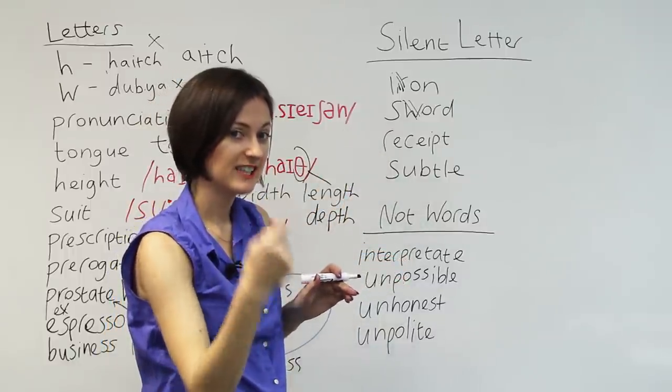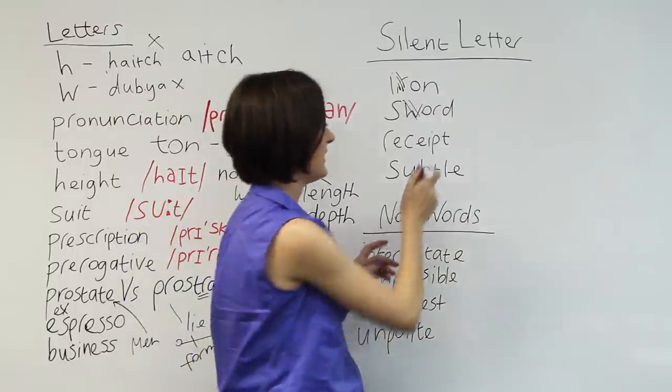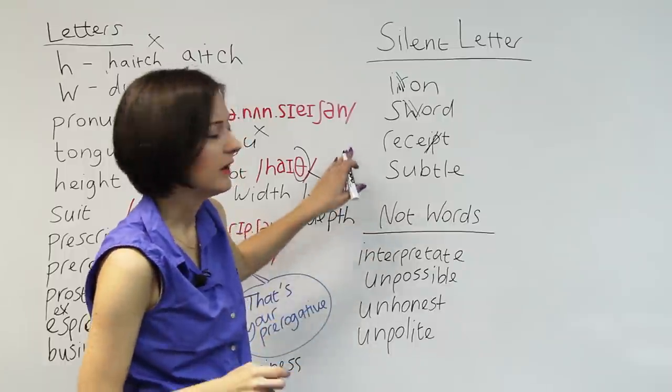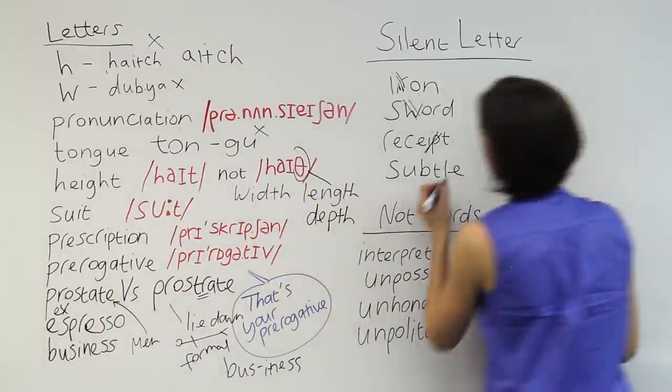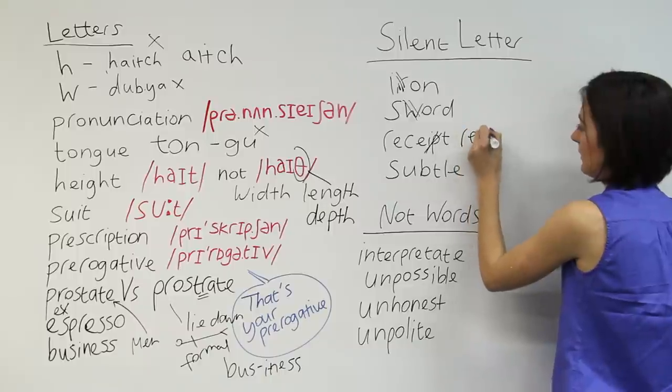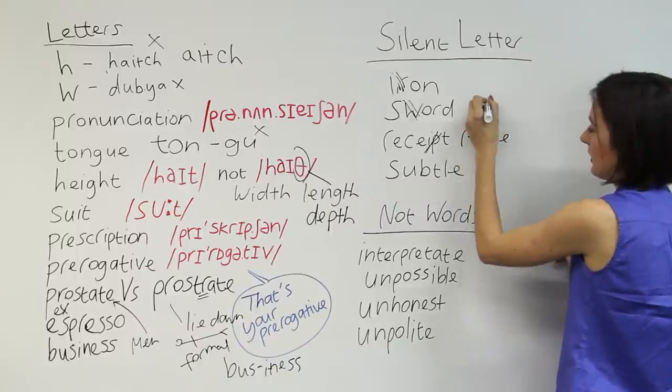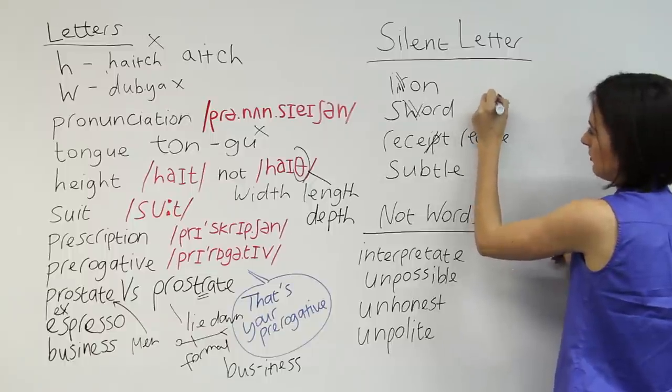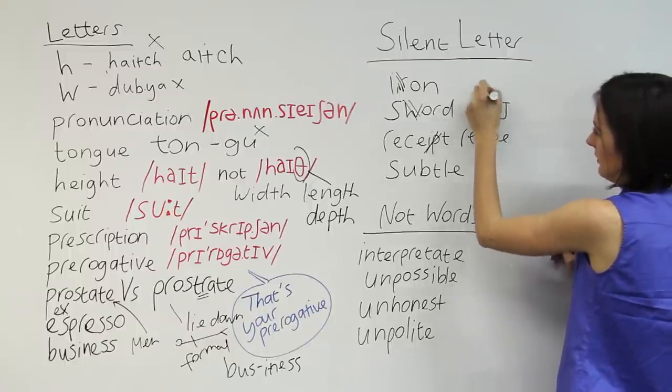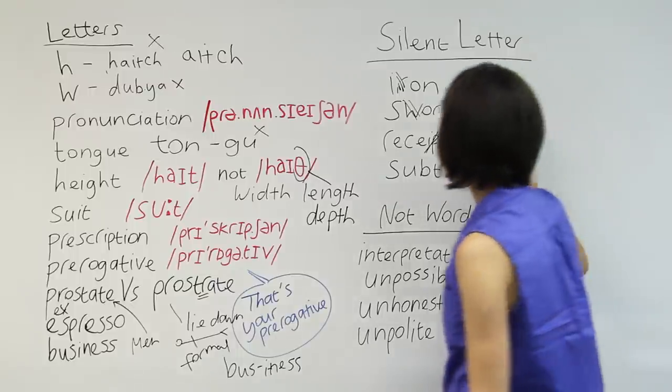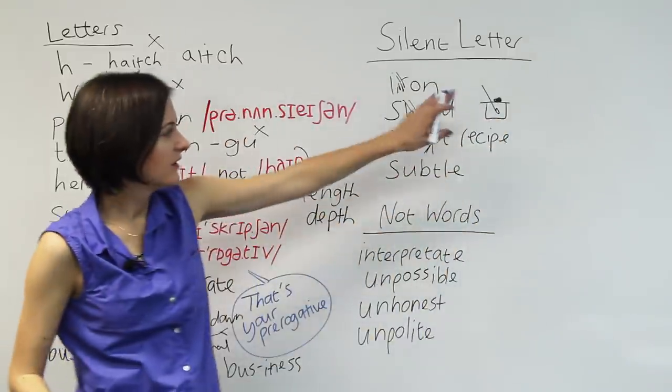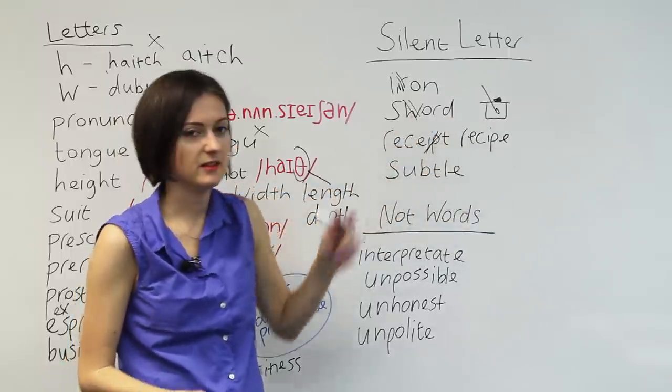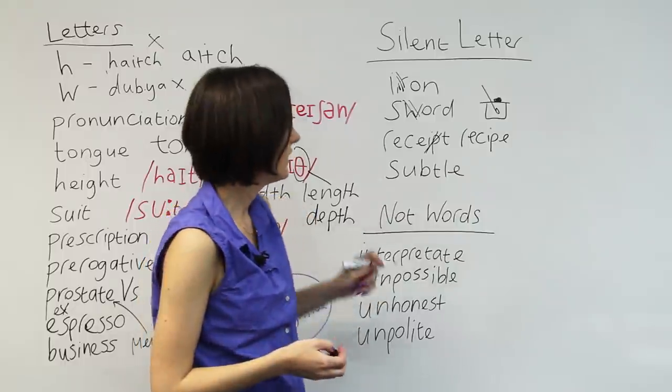What about this one? When you buy something in the shop, they give you a receipt. No P. Also, I should mention about this word that very often people confuse it with recipe. Recipe is to do with cooking. That's meant to be something you cook with. Recipe is to do with cooking, and receipt is to do with buying things.